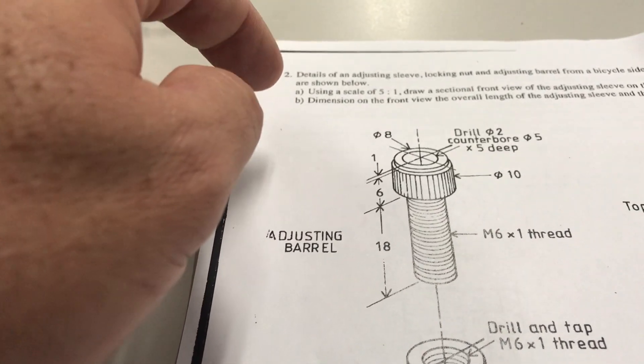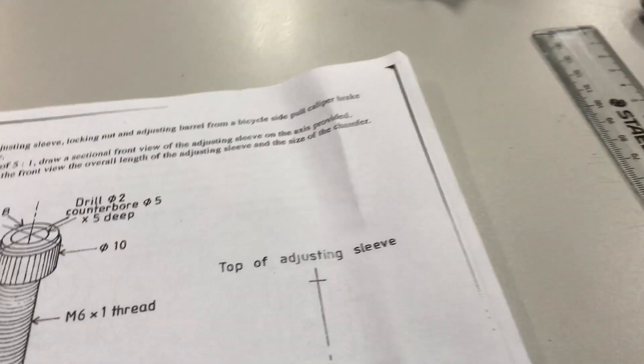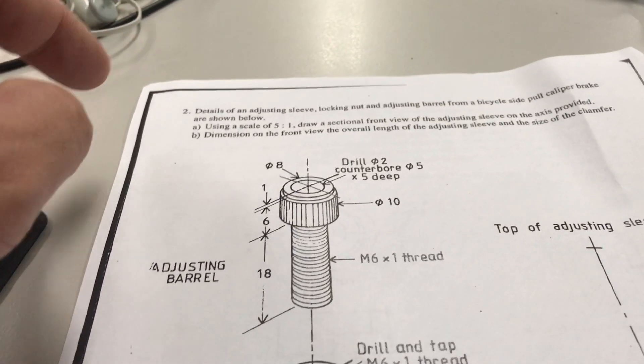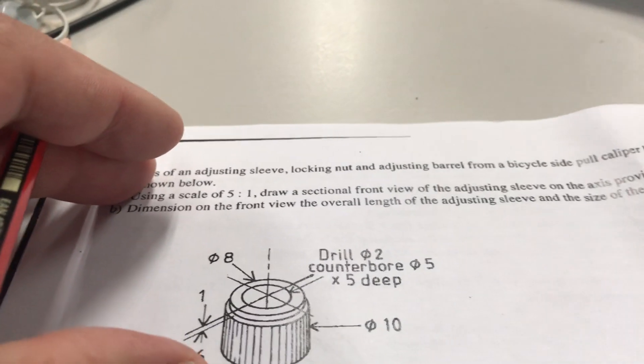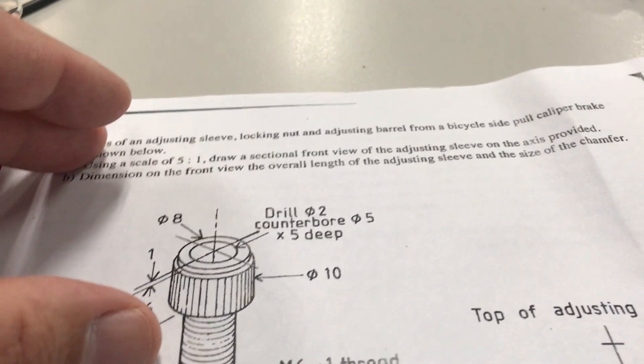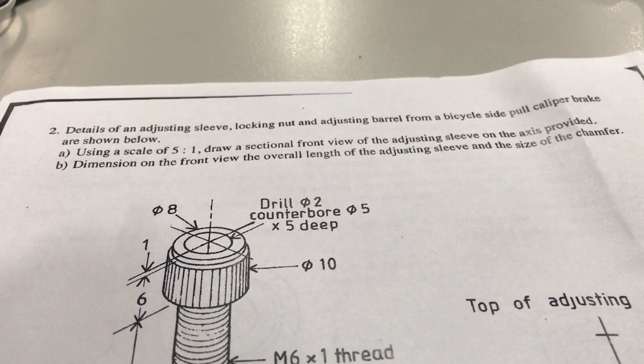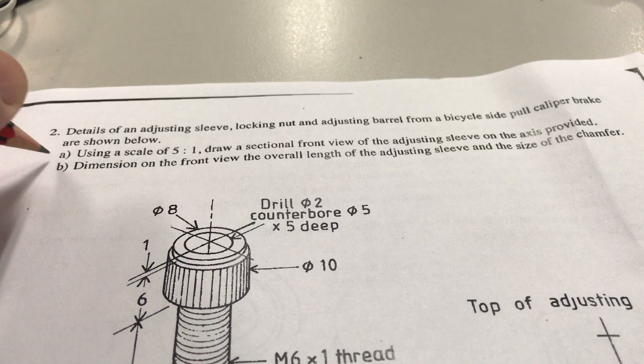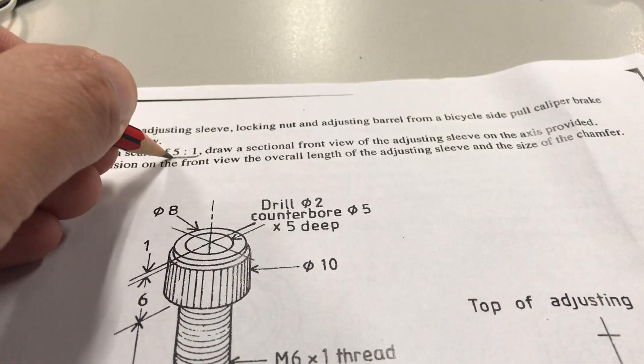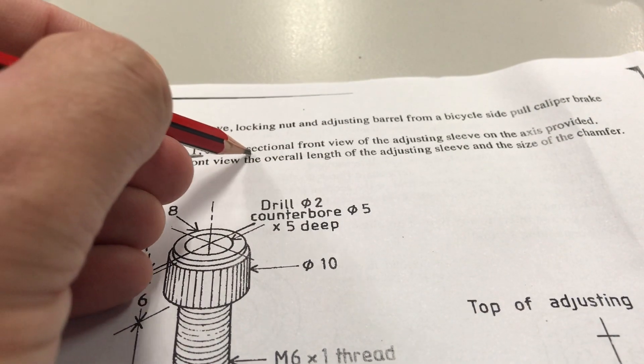Okay, so first of all we need to know what part we're actually trying to do a section of. Whenever you're doing this type of question, it's always a good idea to make sure that you underline or note the sections of the question you need to answer. First of all, it says use a scale 5 to 1. So we need to understand what that means. Draw a sectional front view, so it's a sectional view of the adjusting sleeve.